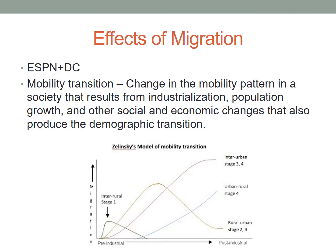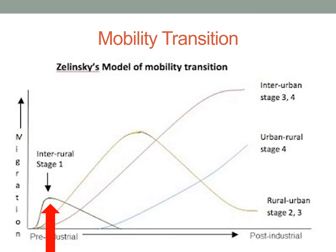A model that draws connections between demography and migration is the mobility transition model created by Wilbur Zielinski. This model looks at the change in the mobility pattern in a society that results from industrialization, population growth, and other social and economic changes that also produce the demographic transition. Early in the model, there is little migration but rather movement in search of food. If someone does migrate, it will often be to another rural village.